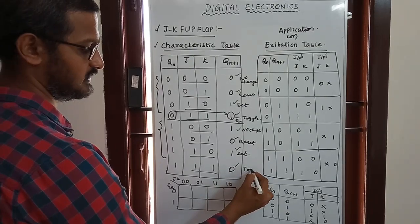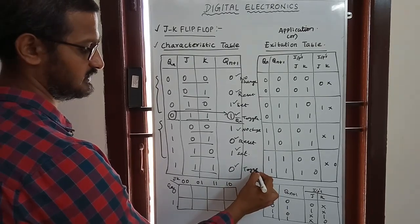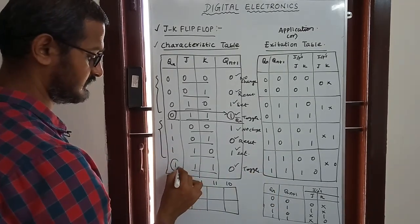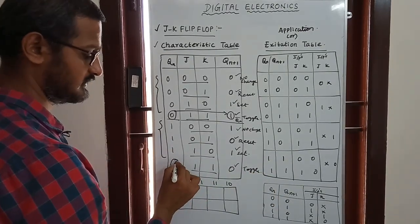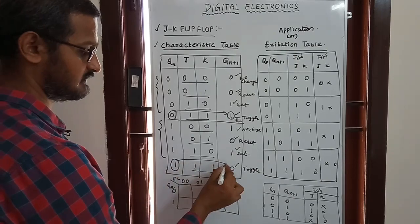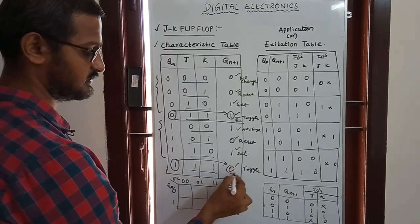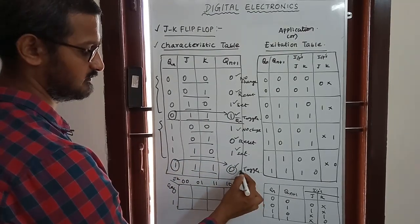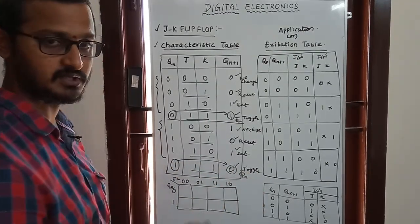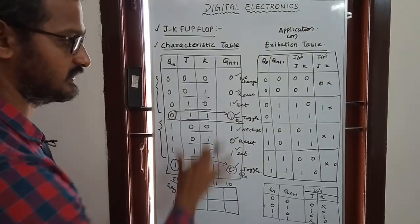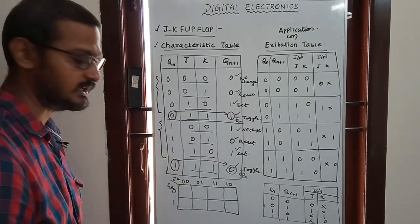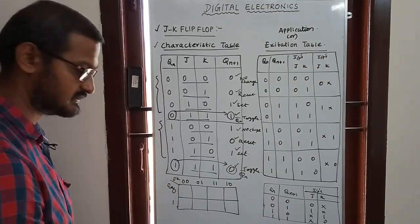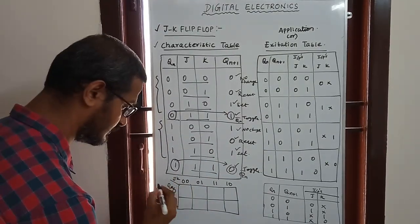In the toggle condition, when Qn is 1, the next output is 0 — that is the Qn-bar condition. So the characteristics table is now complete.